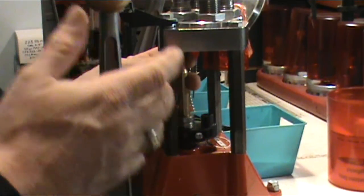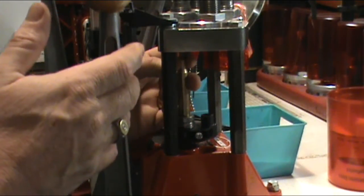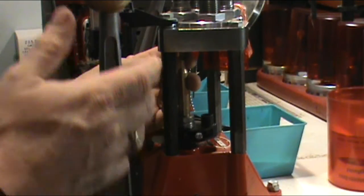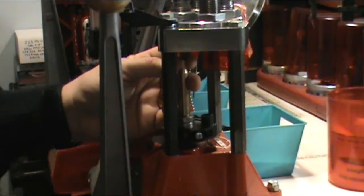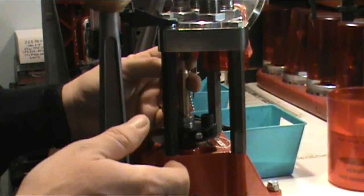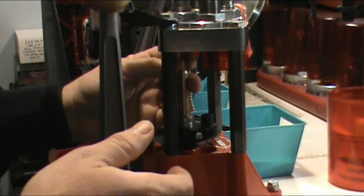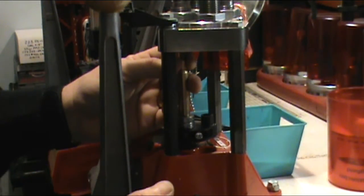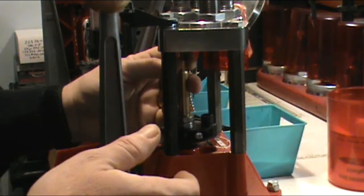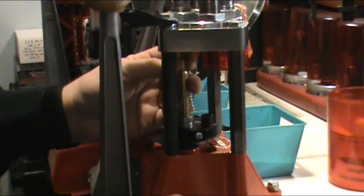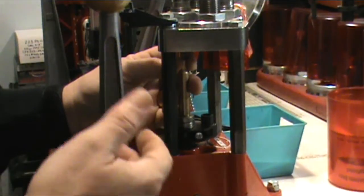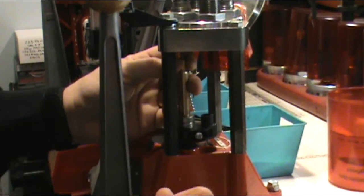All my brass when I load rifle especially is all trimmed, primer pockets are cleaned, they're decrimped if they're military brass, they're uniformed, all my brass is trimmed, all my brass is cleaned before I load rifle ammo. That's the reason why I can do it on a turret and feel comfortable.